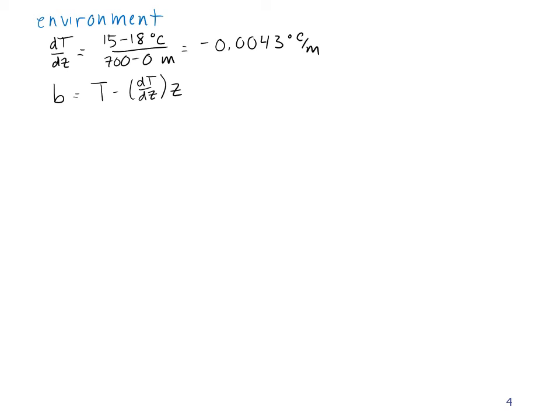So b is equal to T minus dT/dz times z. I just took the equation for my line, rearranged it to solve for b, and now I can substitute in one of my T-z points to solve for b. I'm going to pick the one at 18 degrees and zero meters because that's easier. So I have 18 degrees Celsius minus this slope, which I'm not going to bother putting in here because my z is equal to zero. And so this means that my b is 18 degrees Celsius. So overall, the equation of the line is T equals minus 0.0043 degrees Celsius per meter times z plus 18 degrees Celsius.